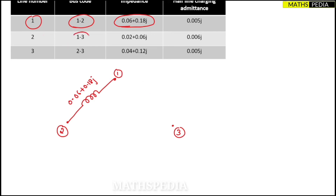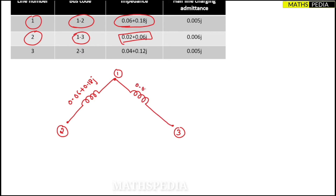The second row shows line two between nodes one and three, with impedance 0.02 + j0.06. The remaining entry is line three between nodes two and three, with impedance 0.04 + j0.12.